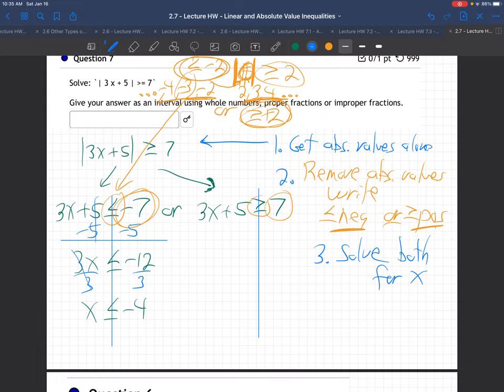Then over here, what am I going to do? I am going to subtract 5 from both sides. And what do we got here? That's 2. And x is greater than or equal to 2 thirds.